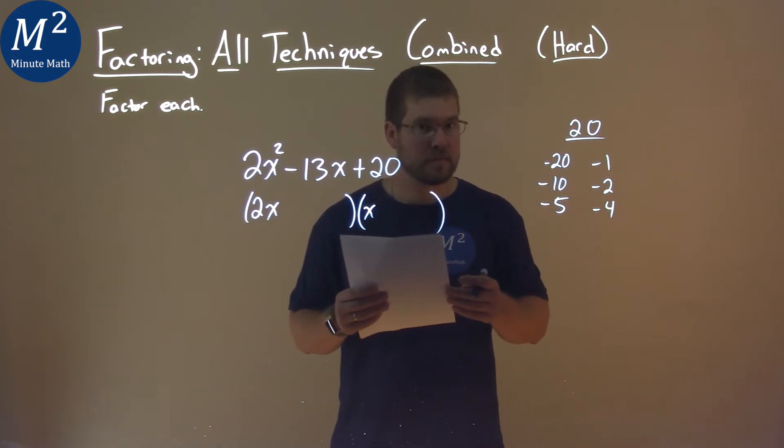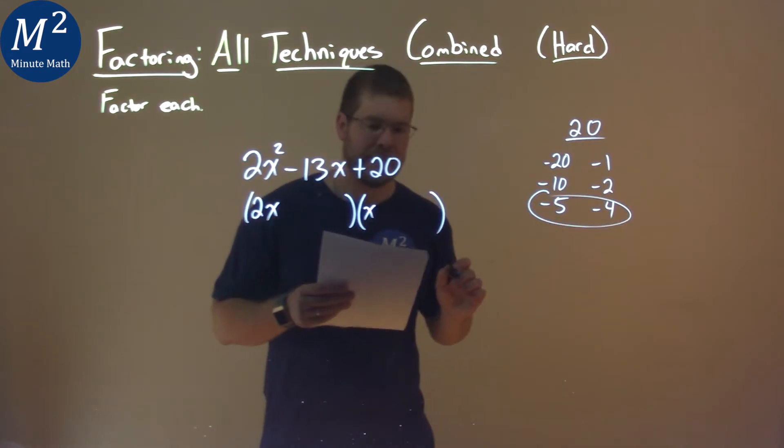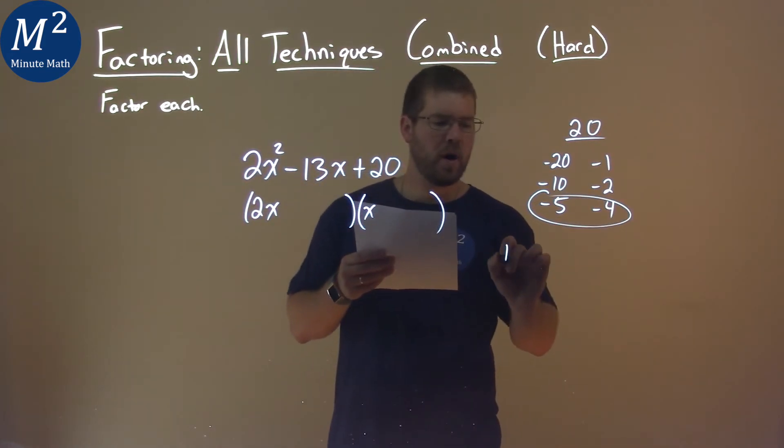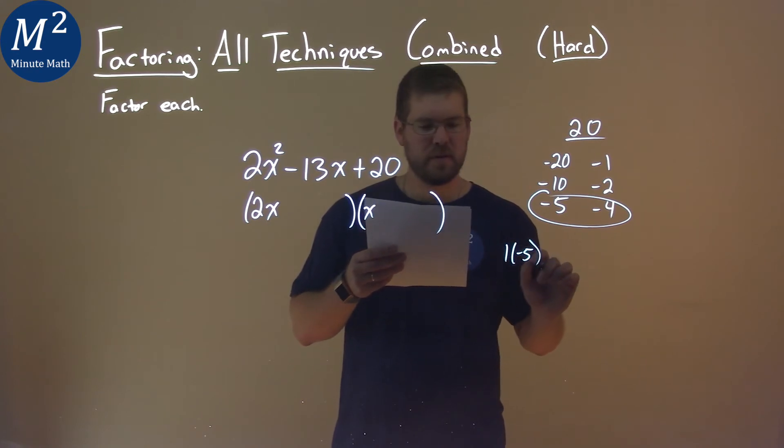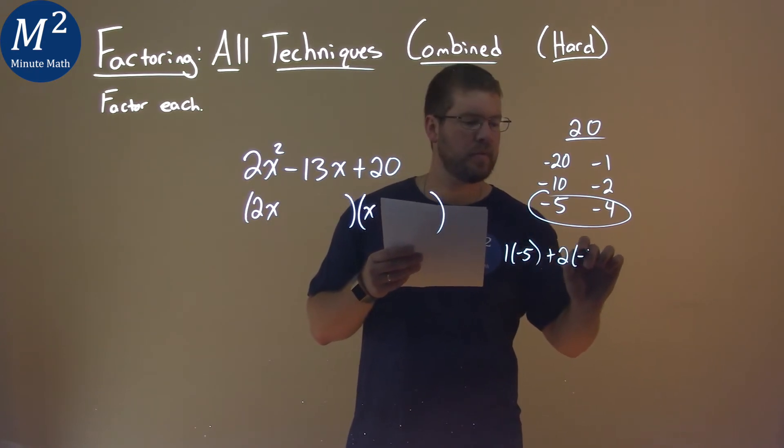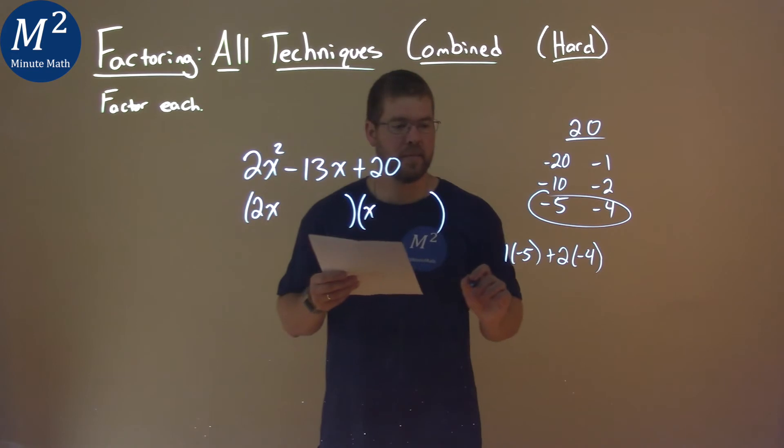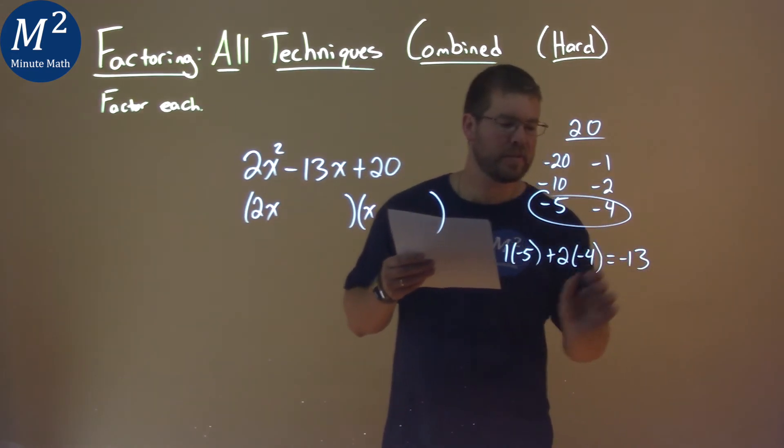Can you guess it? The pairs are going to be negative 5 and negative 4. 1 times a negative 5 plus 2 times a negative 4, right, what does that come out to be? A negative 13.